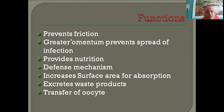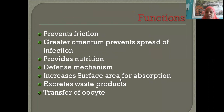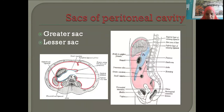Functions of the peritoneum: it prevents friction, the greater omentum prevents the spread of infection, it provides nutrition, it gives a defense mechanism through macrophages that kill microorganisms, it increases the surface area of absorption, it excretes waste products, and it transfers the ovum.